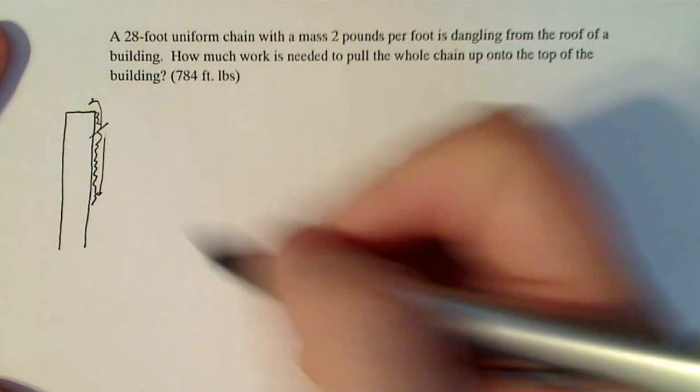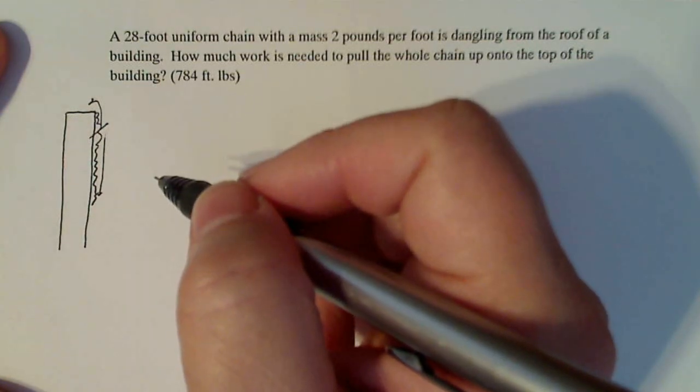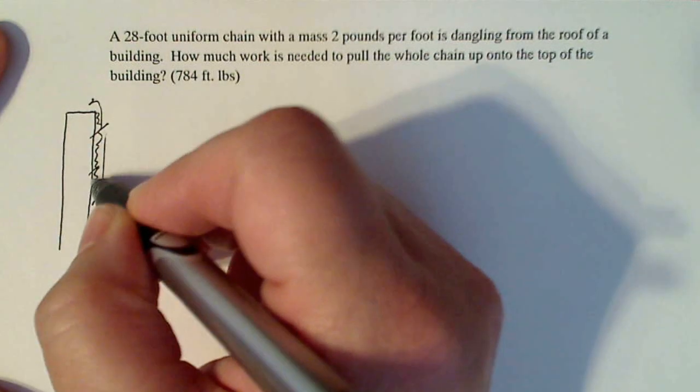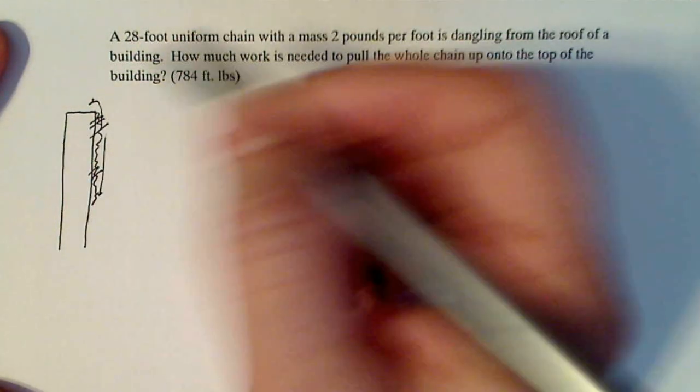So this is why we have to use slicing in order to calculate this properly, because each little slice has its own work requirement to get it up over the top. So this slice down here has a different work requirement to get it over the top than something that's closer to the top.